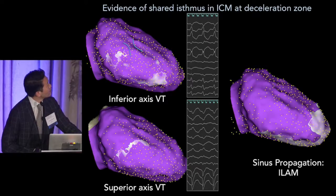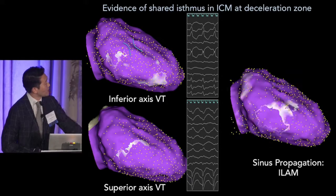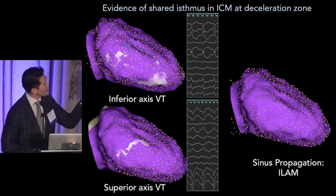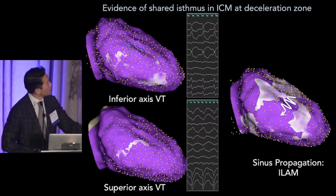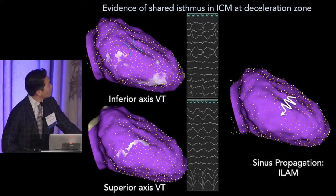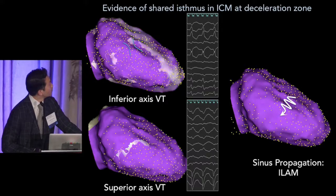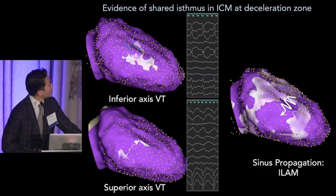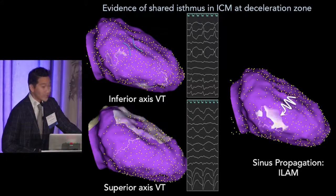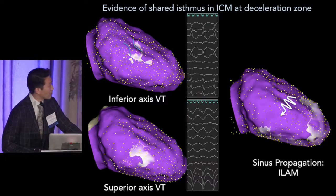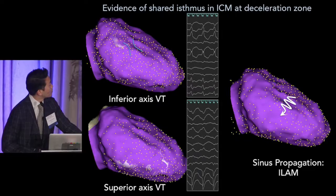Finally, here is evidence of a shared isthmus in ischemic cardiomyopathy at a deceleration zone. In sinus rhythm you can see impulse conduction slowing at that region, and there are two VTs — inferior and superior axis — both sharing the isthmus in the region of deceleration in a patient with an endocardial ischemic anteroseptal infarct. Thank you very much.